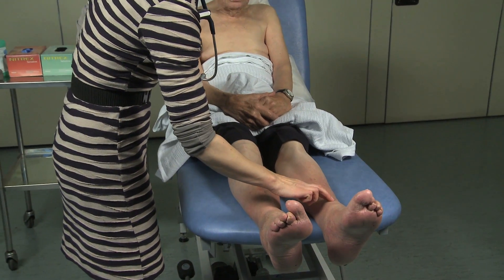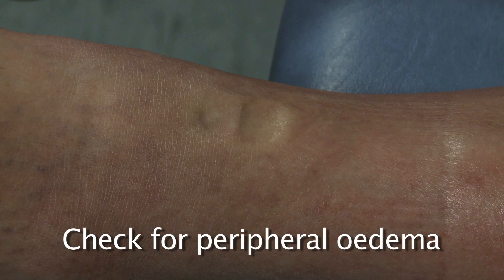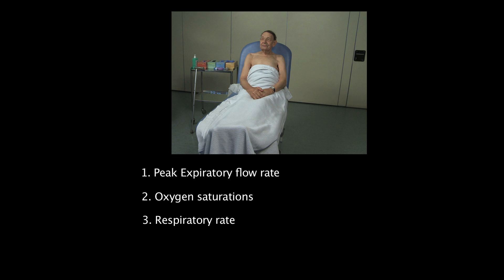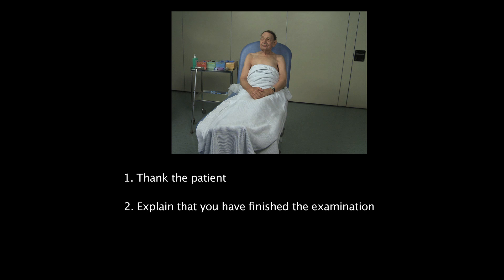To finish off the examination, check for peripheral oedema. You may also want to ask for the peak expiratory flow rate, oxygen saturations, respiratory rate, and sputum pot. Thank the patient and help to cover them up. Explain the examination is over and offer to help them get dressed.